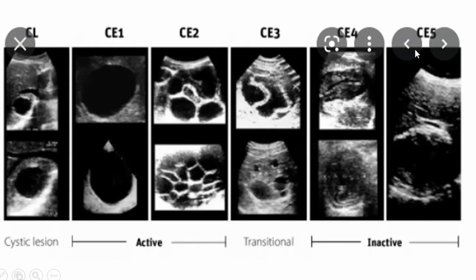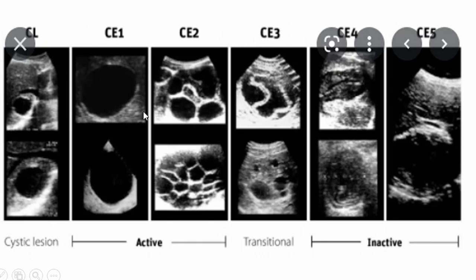Here is a pictorial demonstration of the different classifications. Starting from the active stages, these are the sonographic appearances that you can see — they are very variable. The most interesting under the transitional stage is the water lily sign, where the daughter cyst is detached from the main cyst. You can also have the honeycomb or fishnet-type appearance, part of the active stage. A cystic lesion with no internal echoes can be confusing with other types of cysts.